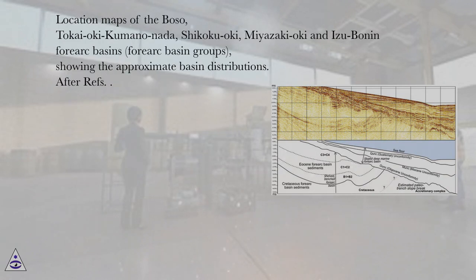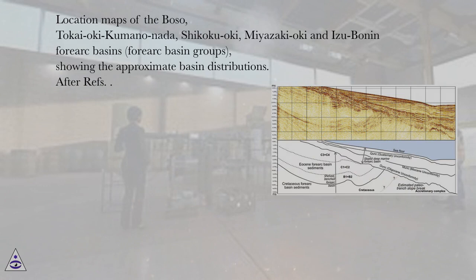Location maps of the Boso, Toke-Oki, Kumano-Nada, and Shikoku-Oki Forearc Basin Groups, showing the approximate basin distributions.